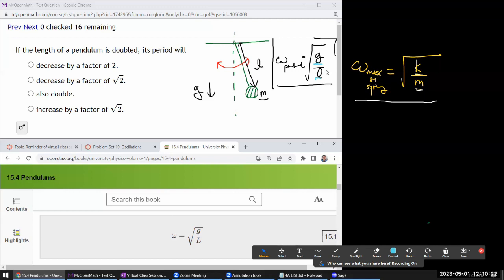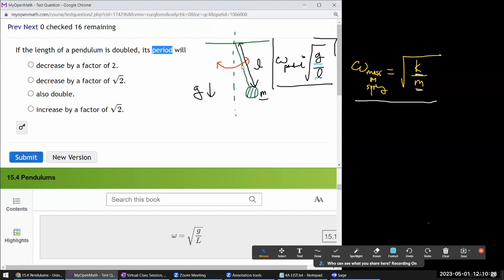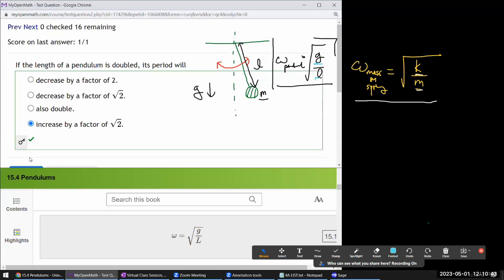So, the denominator here is becoming greater. And they are asking for period. So, it's the reciprocal. It's proportional to the reciprocal of the angular frequency. The longer length would mean greater period for slower oscillation. So, it would increase by a factor of square root of 2 because of that square root. Good? Let's look at next two questions.